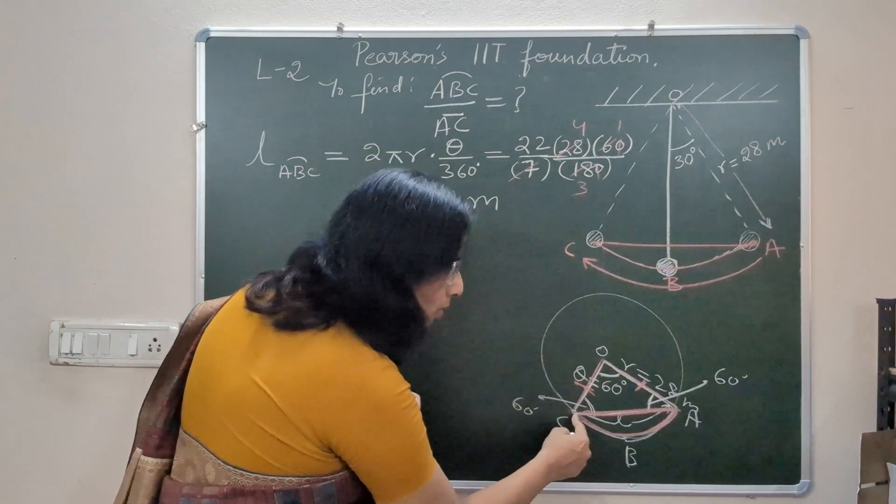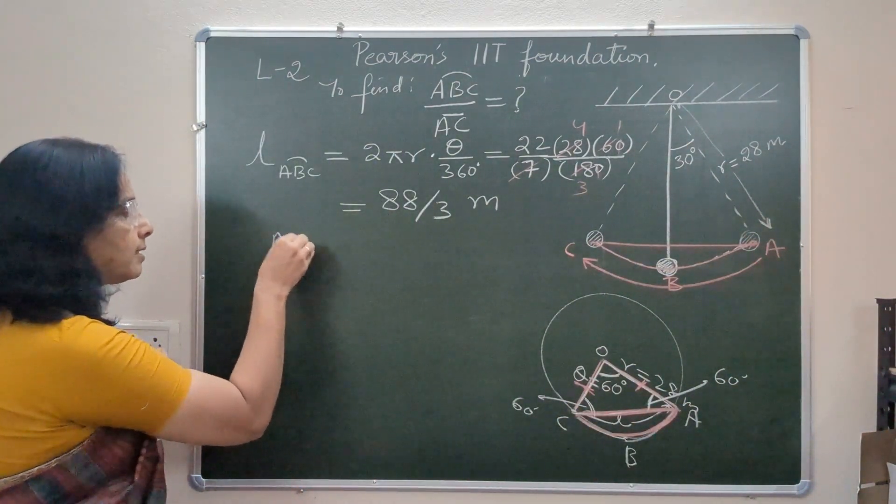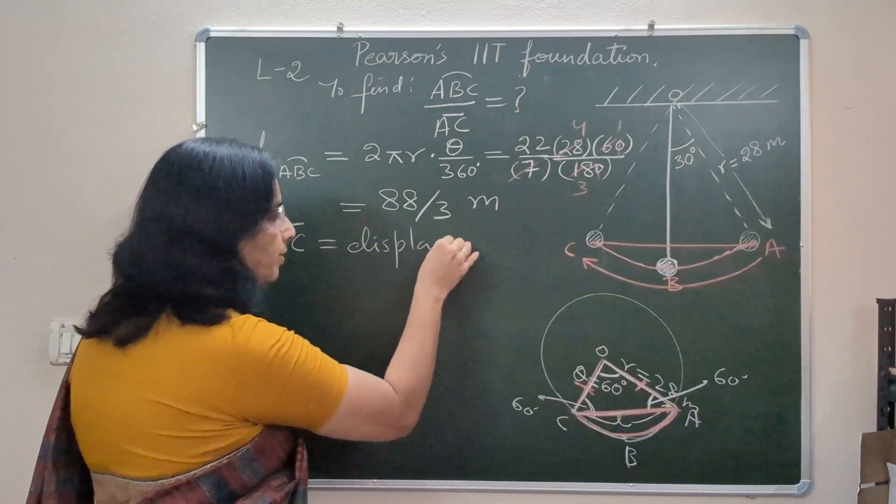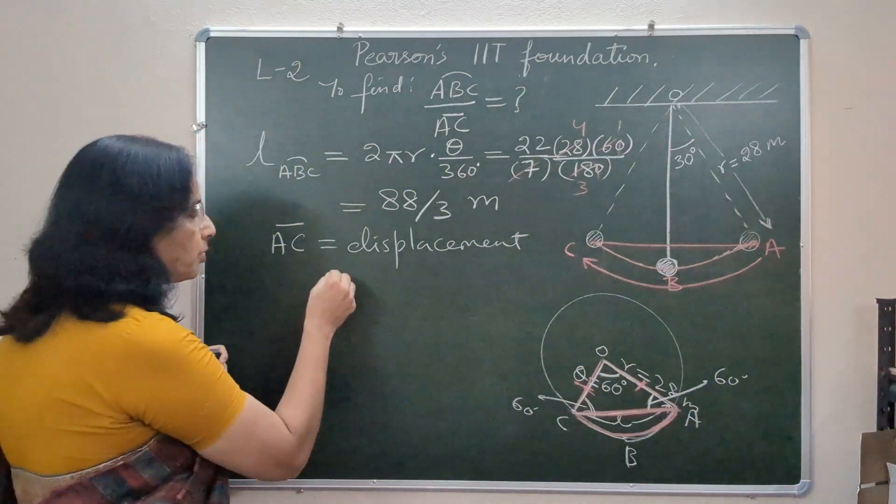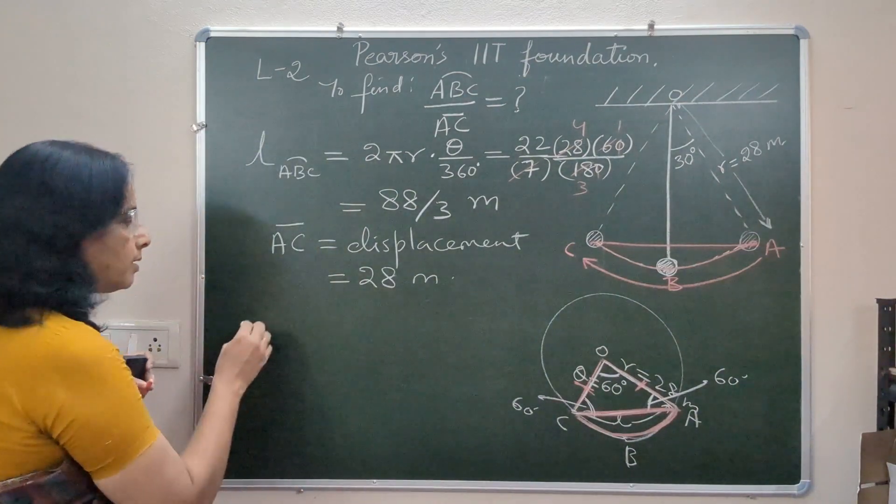In that case AC also should be 28. So line segment AC, which is displacement of the bob from one extreme position to another extreme position, that is also 28 meters.